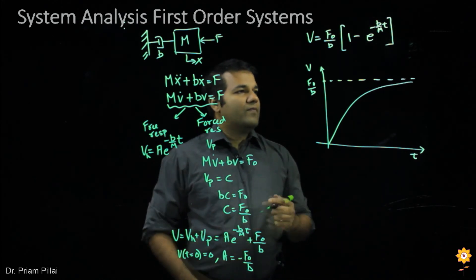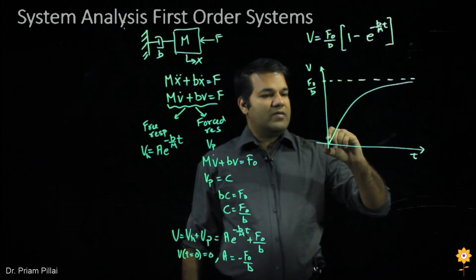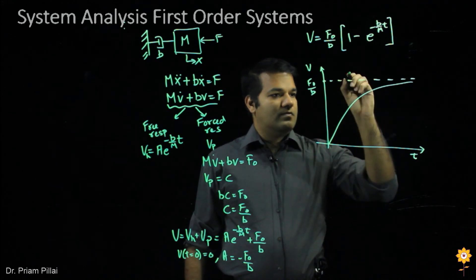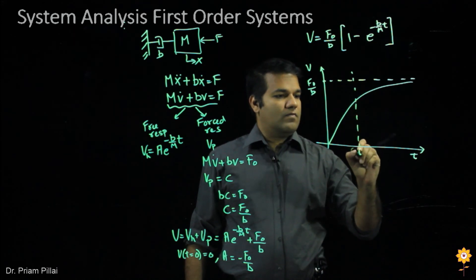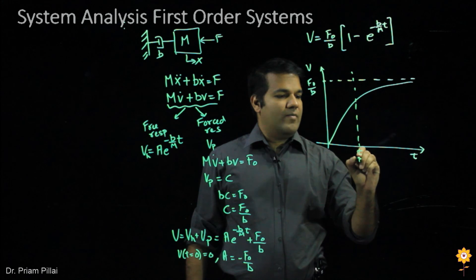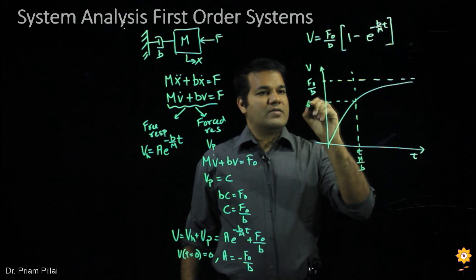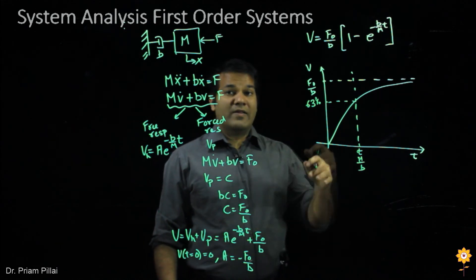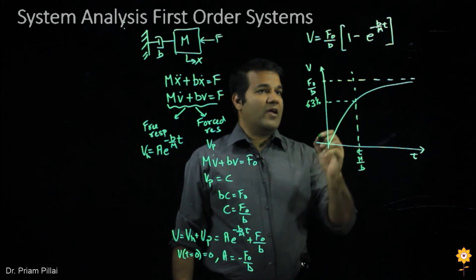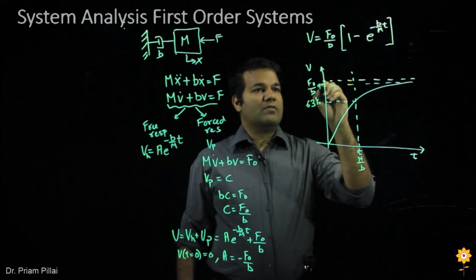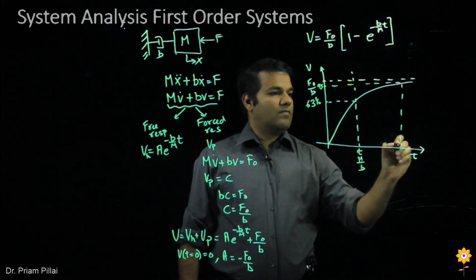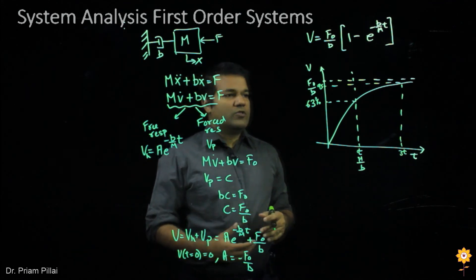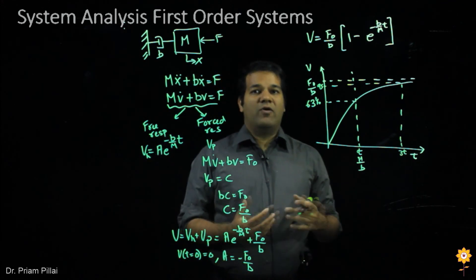Here again, we can say that in one time constant, tau or m by b in this case, you would reach 63% of your final value. And by three time constants, you would reach 95% of your final value. So time constant is an important thing to understand when trying to design your system. You need to know what these time constants are and how parameters of your system influence those constants.